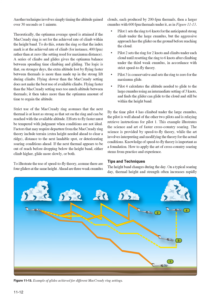To illustrate speed-to-fly theory, assume four gliders at the same height with three weak cumulus clouds producing 200 FPM thermals ahead, then a larger cumulus with 600 FPM thermals. Pilot 1 sets the ring to 6 knots for the anticipated strong climb but ends up on the ground before reaching it. Pilot 2 climbs under each weak cloud at 2 knots, then resets to 6 knots after the third. Pilot 3 sets the ring to 0 for maximum glide. Pilot 4 calculates with an intermediate 3-knot setting and glides directly to the large cumulus, ending up well ahead of the others.